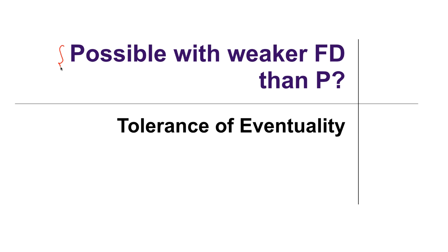We are still examining consensus with weaker failure detectors than P. For example, an eventually perfect failure detector. If you remember, an eventually perfect failure detector is inaccurate and eventually it becomes accurate. So let us discuss limits on the tolerance of an eventually accurate failure detector.